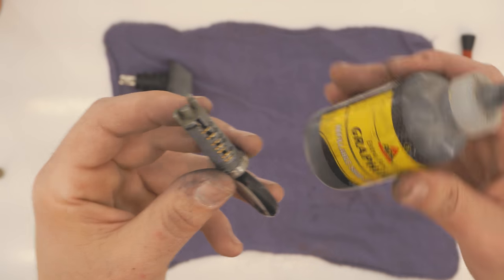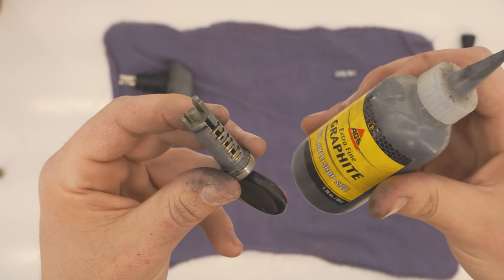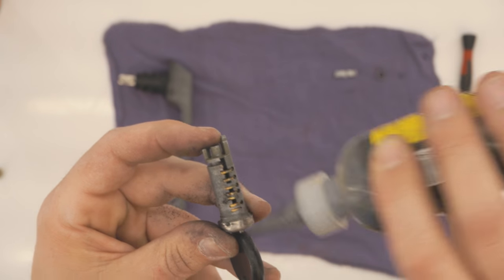I like to lubricate these tumblers with some extra fine graphite powder. It's best to keep a dry lubricant in here so that it doesn't collect dirt or grime.